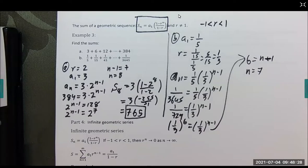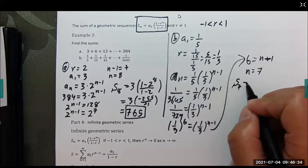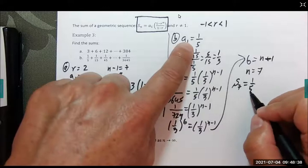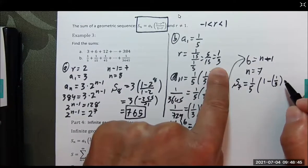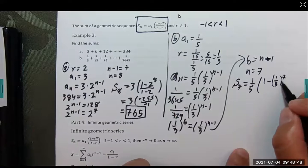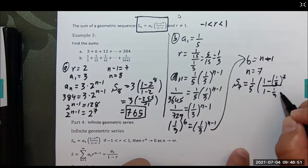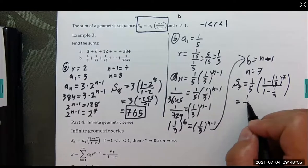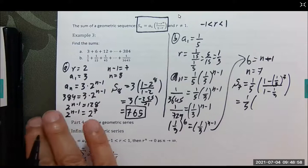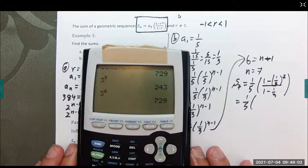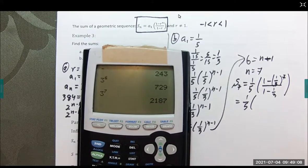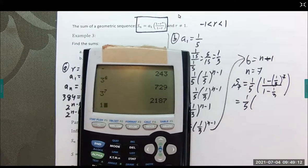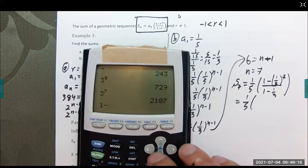Now that I have n, I can find S sub 7. A sub 1 is 1/5 times (1 minus (1/3) to the 7th power) divided by 1 minus 1/3. 1/5 times... let's get a common denominator. 1 minus 2,187... this is going to give us negative 2,186 divided by 2/3. This is 1 over that.